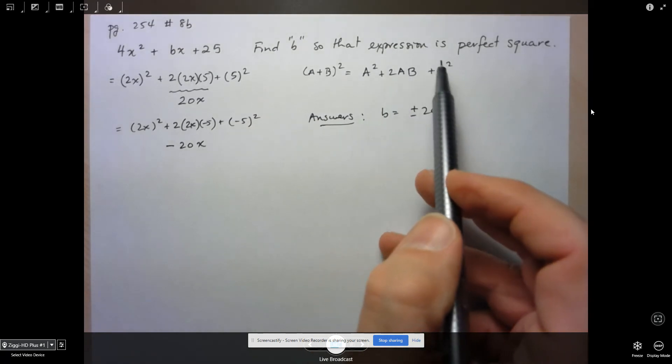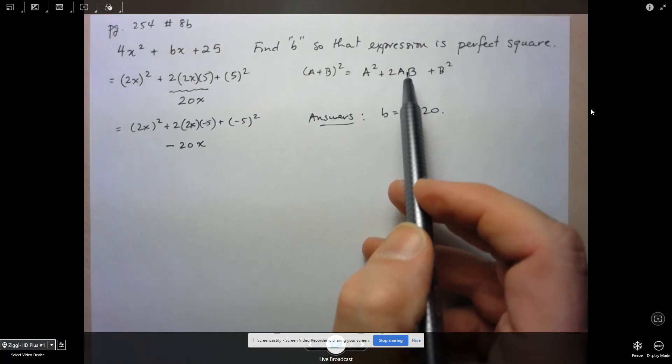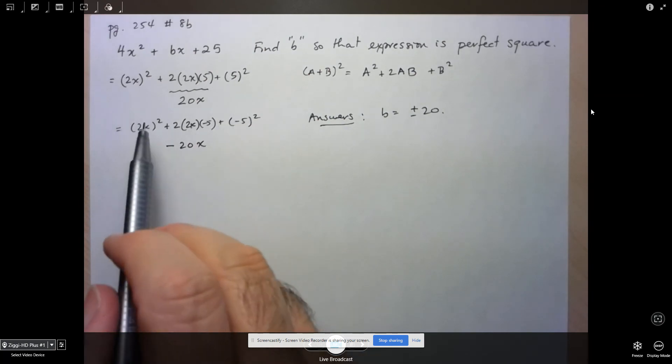First term, square root of the first, square root of the last, and two times the product of first and last. In this case here, first and last are 2x and 5, or in the second possibility, 2x and negative 5. That's it for this one.